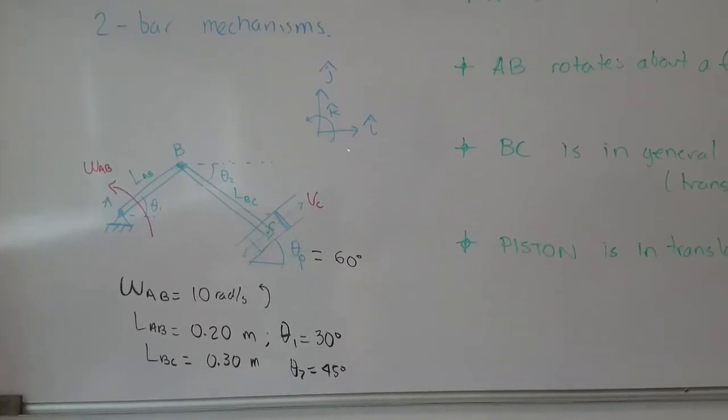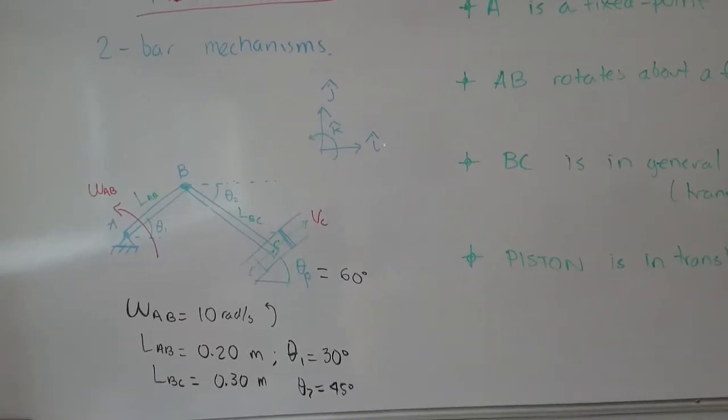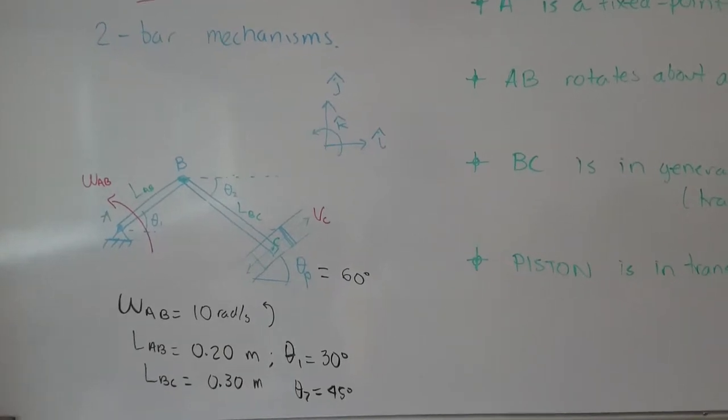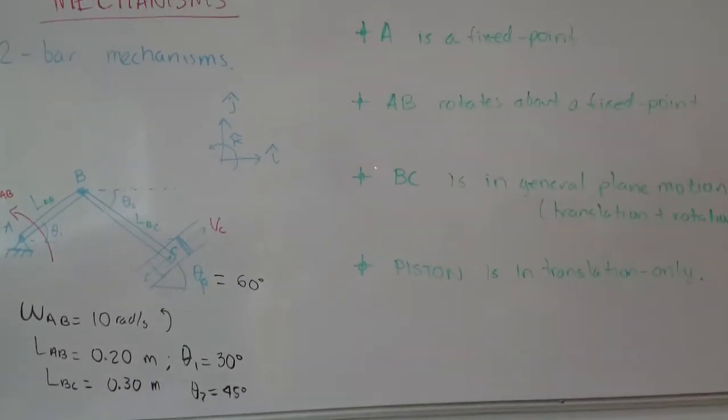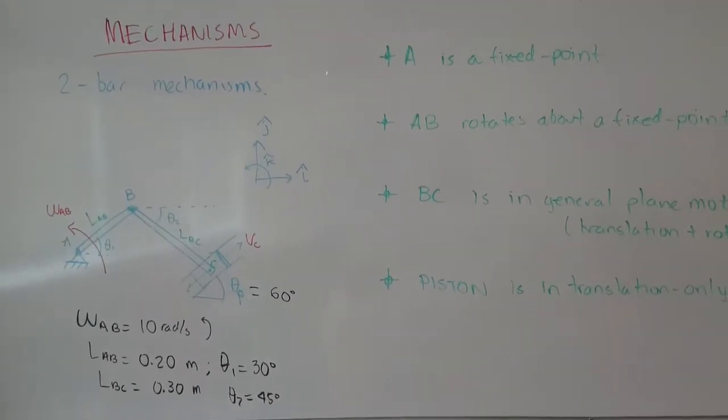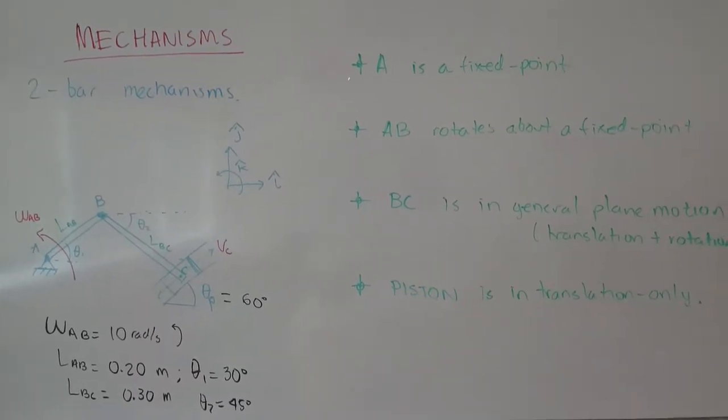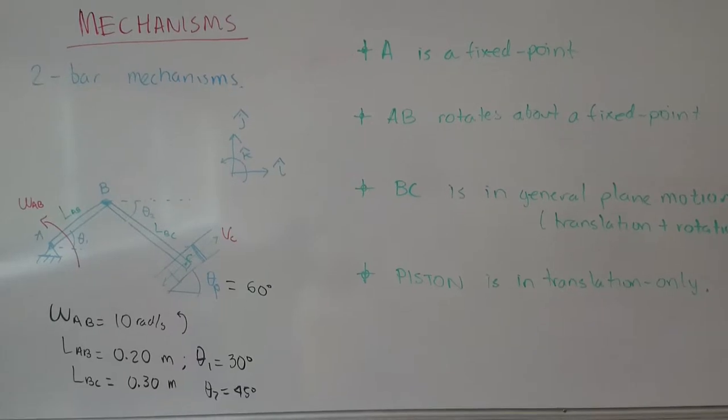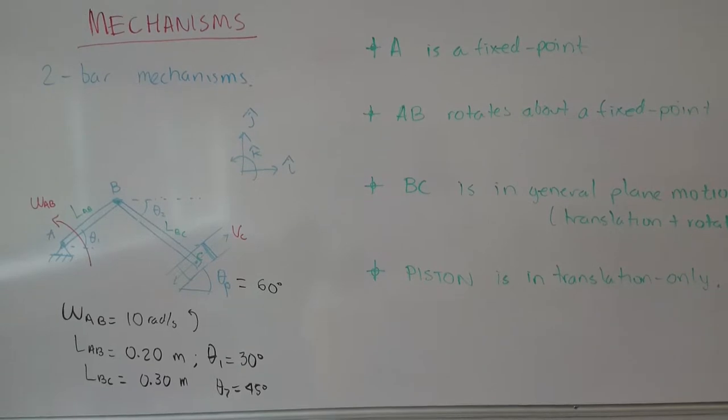We are going to solve this using the vector method. We have here our directions for the scalar Cartesian unit vectors i, j, and k. These are the positive ones. Before we proceed with the solution, we should point out that we know some facts just from the drawing of this mechanism. The first one is that point A is rotating, is a fixed point, and bar AB is rotating about that fixed point A.